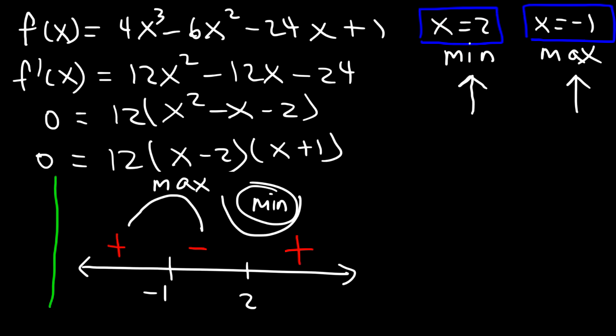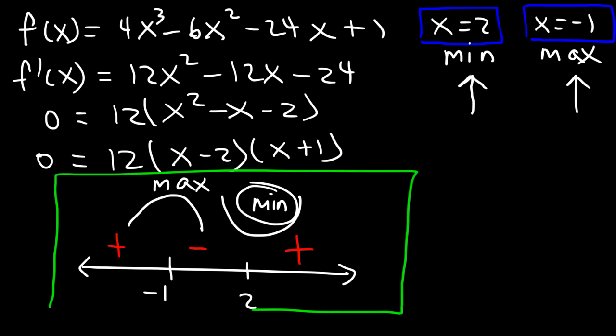Now you know how to use the second derivative test to determine the relative extremum of a function, and you can confirm it with the first derivative test. Find the critical numbers, then check if the second derivative is positive or negative at those points. If positive, it's concave up — a minimum. If negative, it's concave down — a maximum. Thanks for watching.